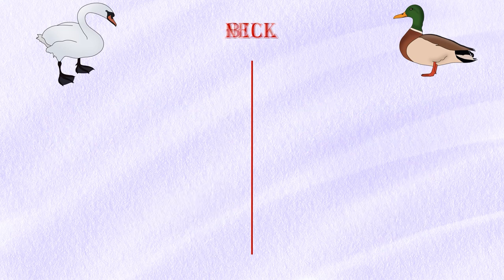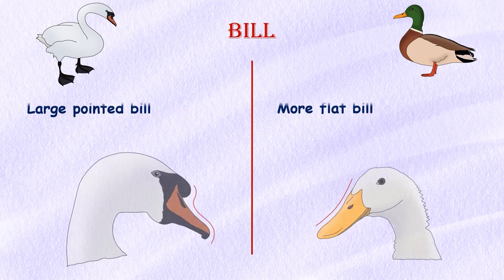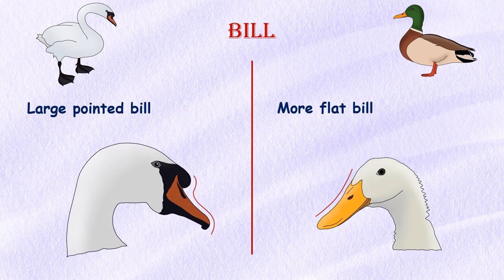Bill: Swans have a large, pointed bill which is orange, black, or combined in color depending on the species, while ducks' bills are usually flatter than the swan's.